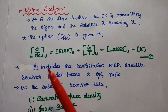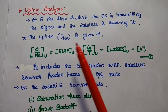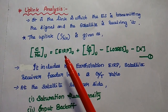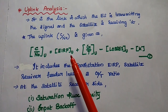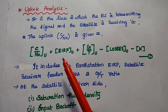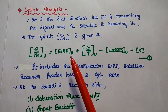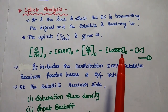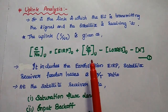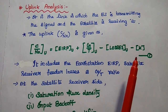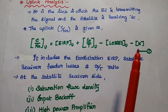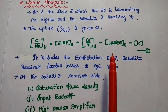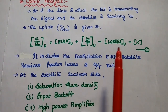This carrier to noise ratio includes the earth station EIRP — EIRP means Equivalent Isotropic Radiated Power. Here we consider only the earth station EIRP. The losses refer to receiver feeder losses at the receiver side, G/T is the receiver figure of merit, and K is Boltzmann's constant. This is the general uplink carrier to noise density ratio.